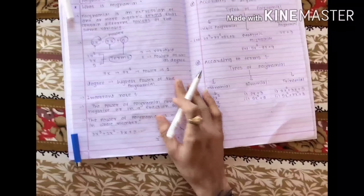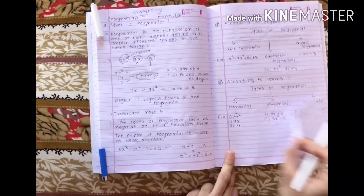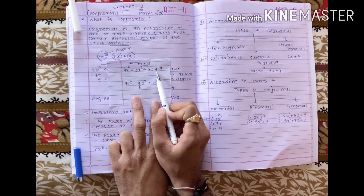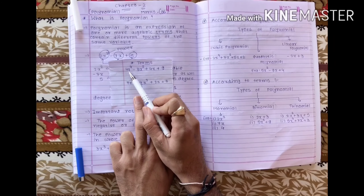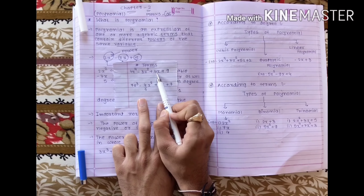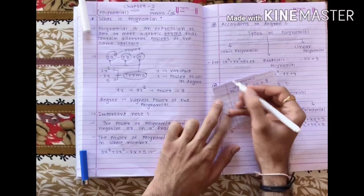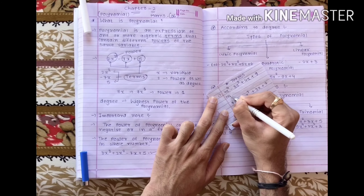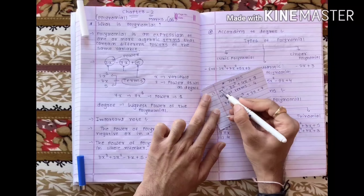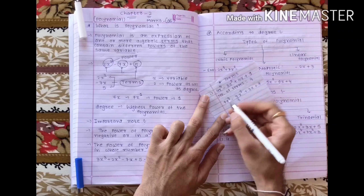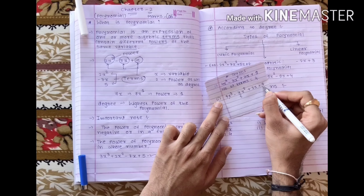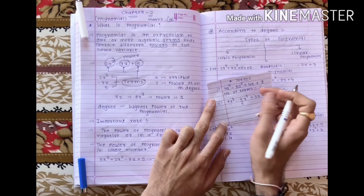Now, one by one, we will understand again with examples. First of all, what is the meaning of terms? In the first example, there is an algebraic expression: 4x⁴ minus 3x² plus 4x plus 9 — there are four terms. Number of terms is equal to 4: 1, 2, 3, and 4. Same as in the second example, there are also 1, 2, 3, and 4 terms. I think you all understand about terms.